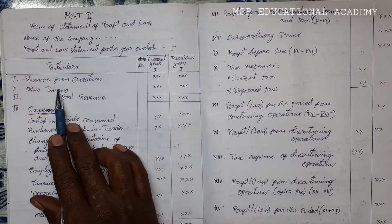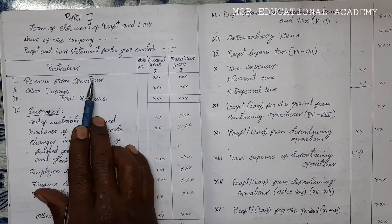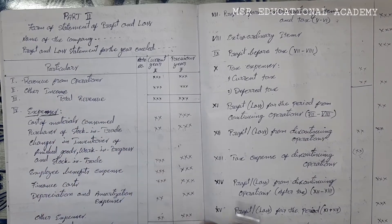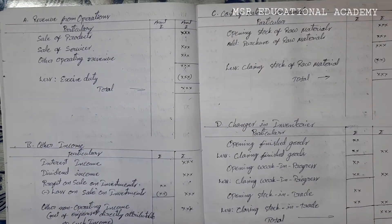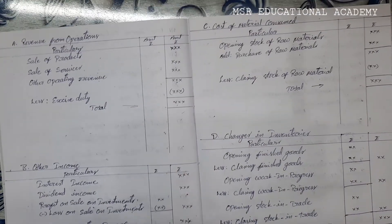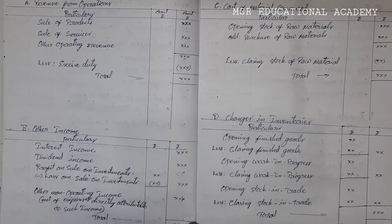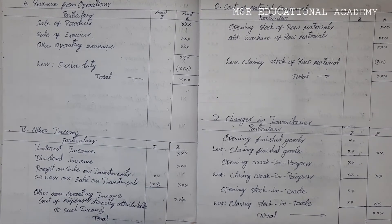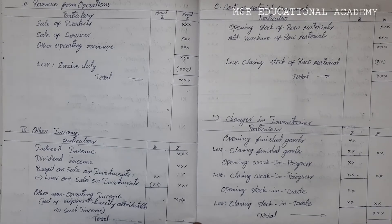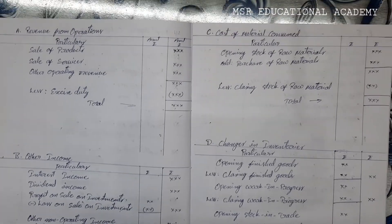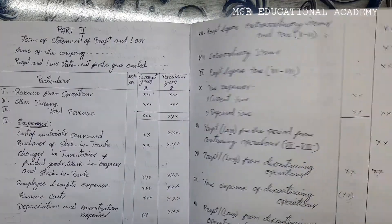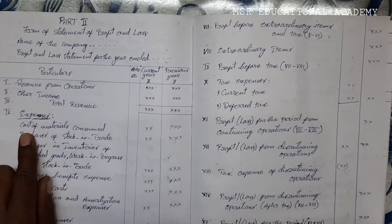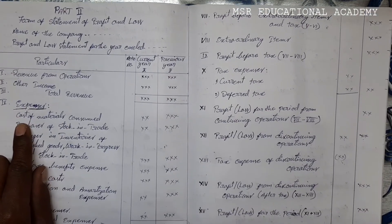After adding revenue from operations and other income, it is total income. As per the profit and loss statement, the incomes are classified like this. After other income, the next one is expenses. Under expenses, first one is cost of material consumed.